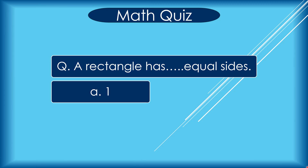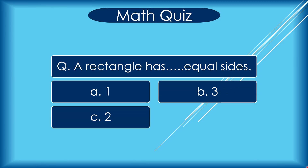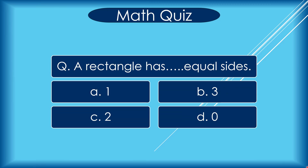A rectangle has how many equal sides? A 1, B 3, C 2, D 0. Correct answer is C 2.